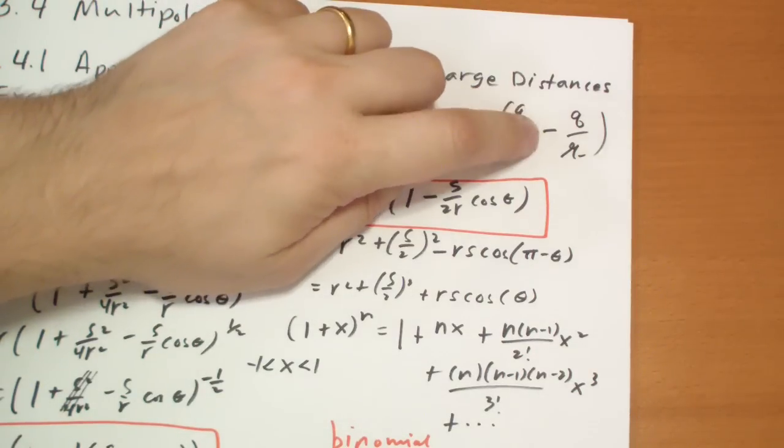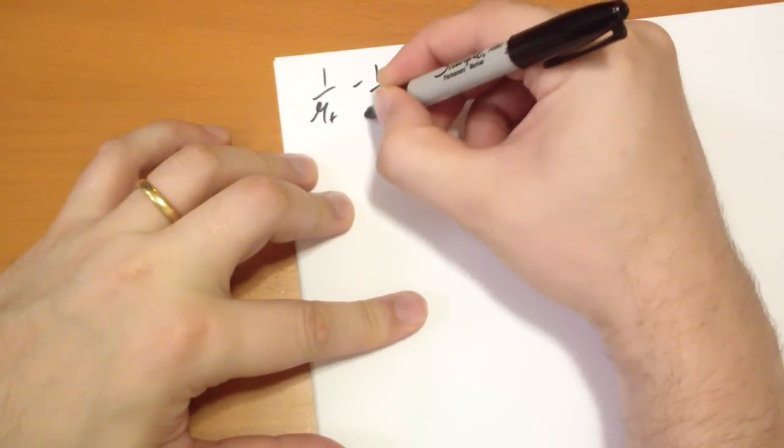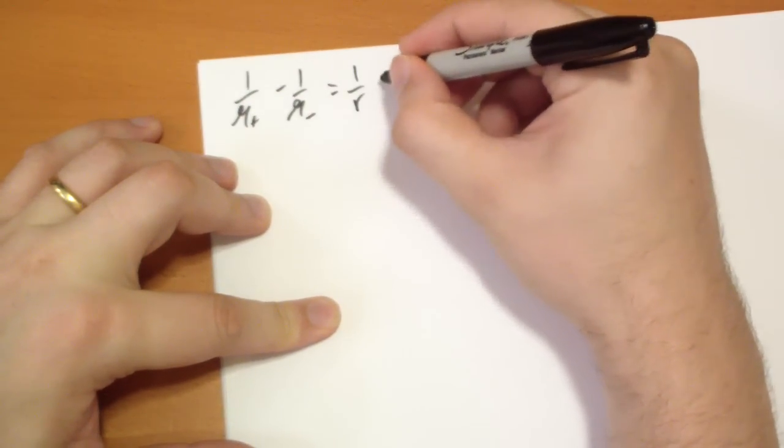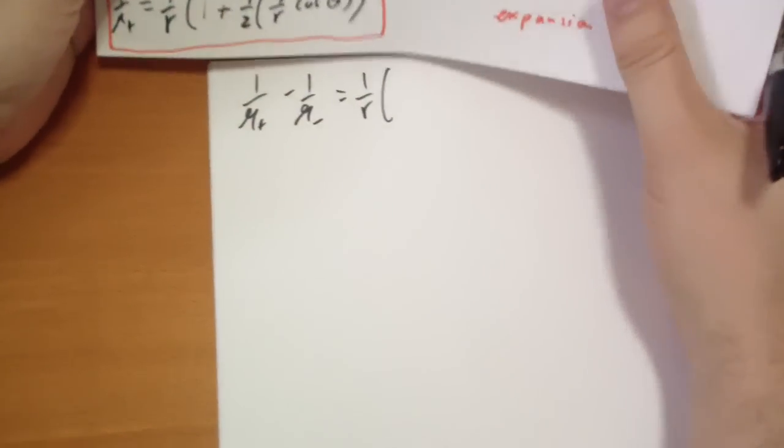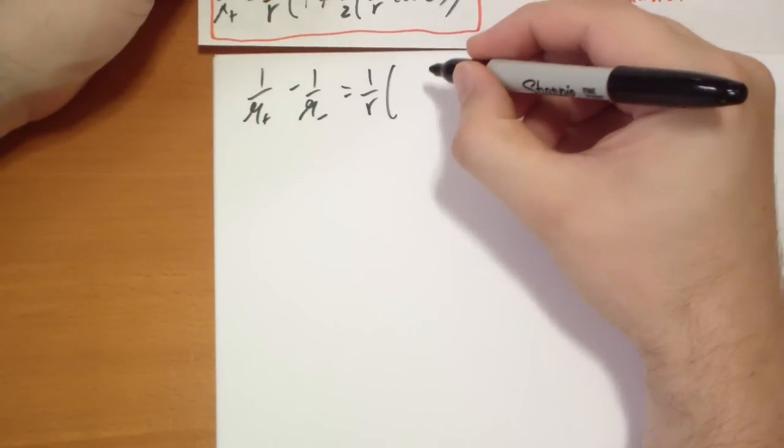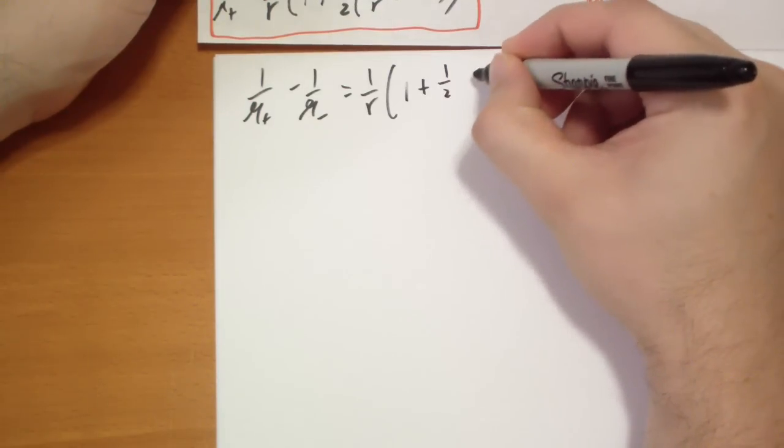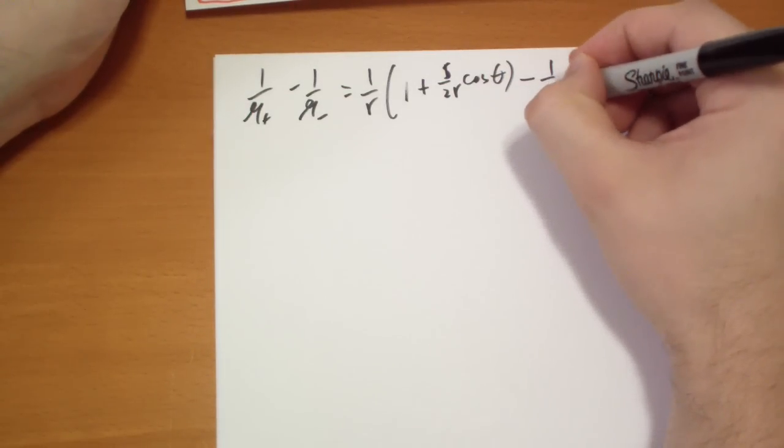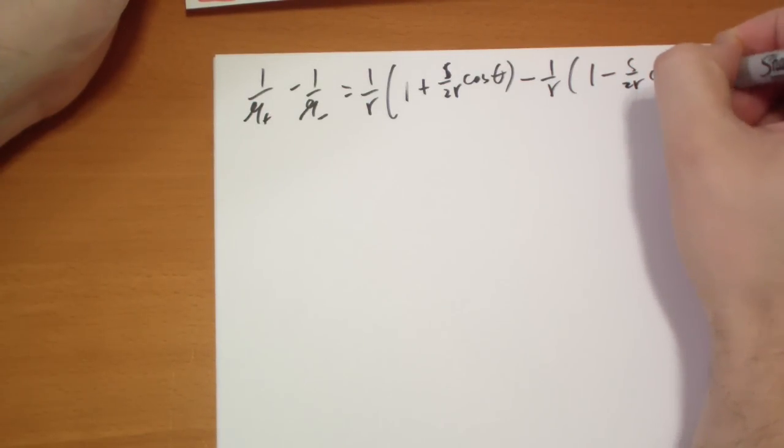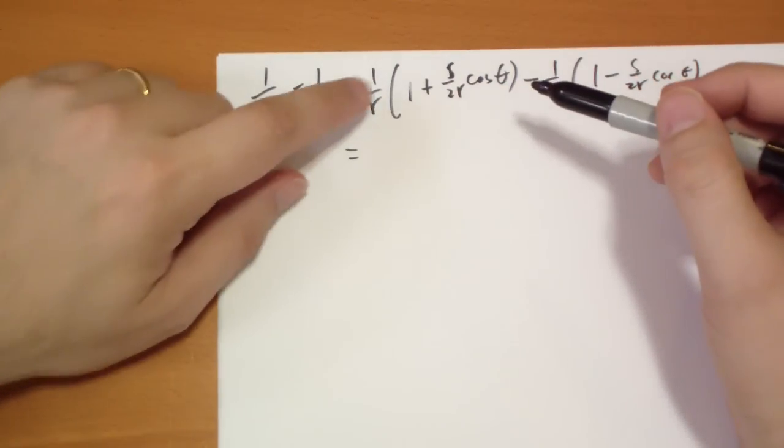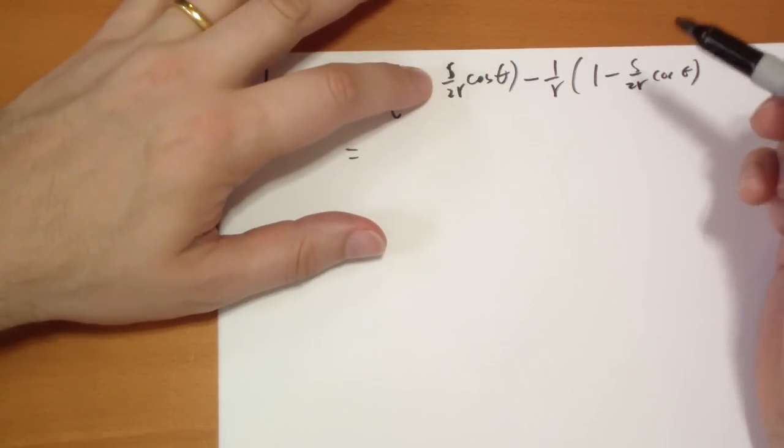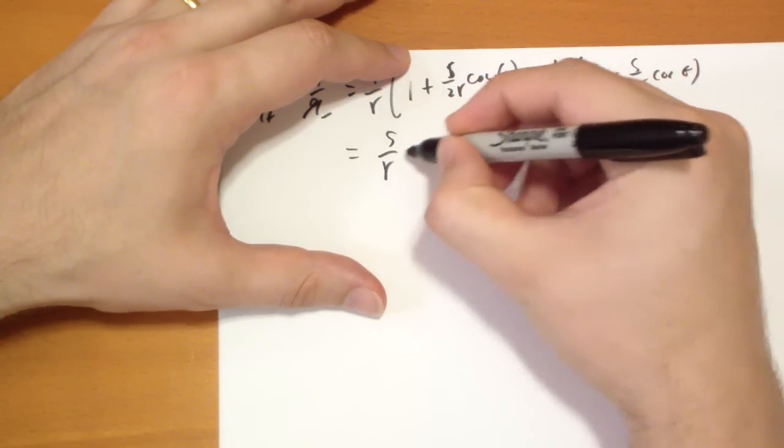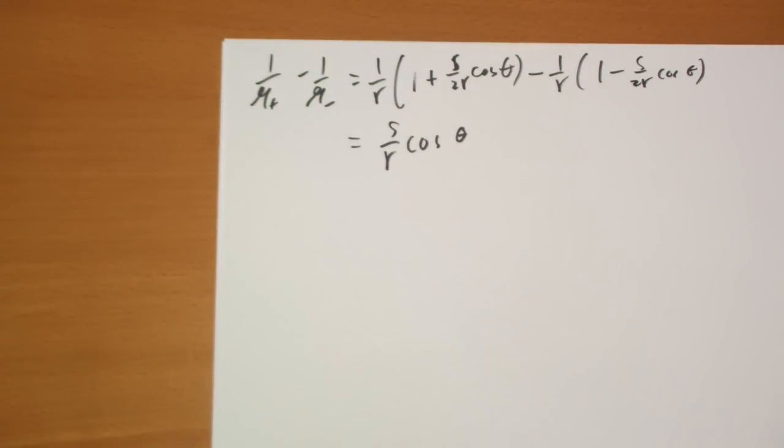So 1 over R plus minus 1 over R minus. New piece of paper. So we have 1 over curly R plus minus 1 over curly R minus equals to 1 over R times 1 plus 1 plus 1 half S over R cos theta. So we distribute the 1 over R's, we get this minus that, so no 1 over R's left. This plus that, so we get 2 of those. So we get S over R cos theta is the difference between the two.